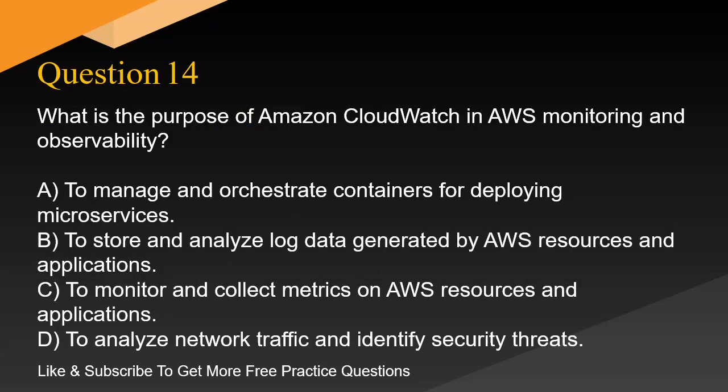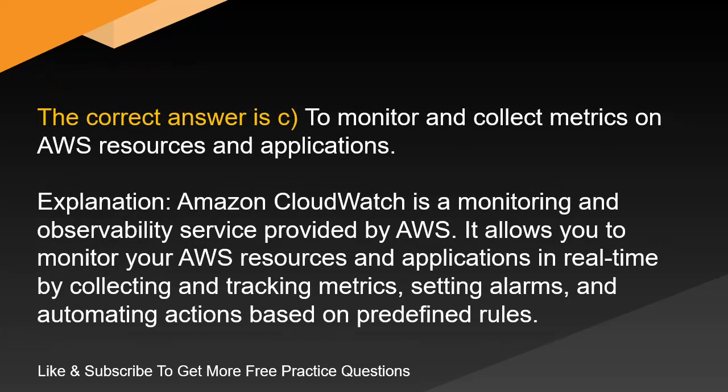Question 14. What is the purpose of Amazon CloudWatch in AWS monitoring and observability? A. To manage and orchestrate containers for deploying microservices. B. To store and analyze log data generated by AWS resources and applications. C. To monitor and collect metrics on AWS resources and applications. D. To analyze network traffic and identify security threats. The correct answer is C: To monitor and collect metrics on AWS resources and applications.